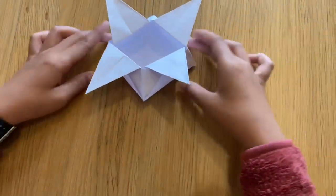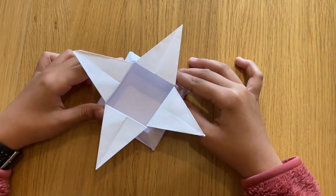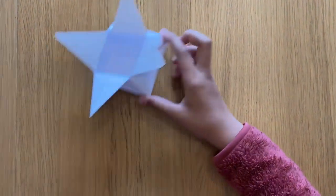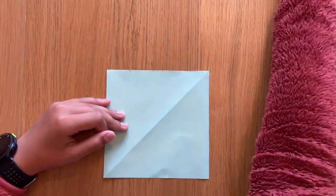So let's get started. For this basket slash hat, you need one piece of paper. To begin with, you need a square base.